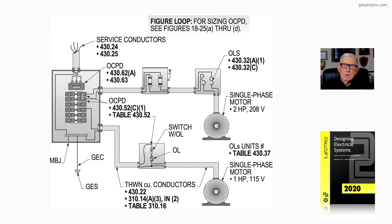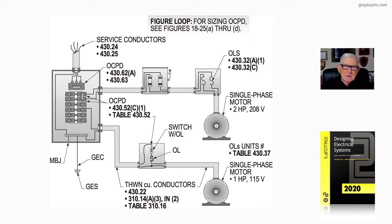Section 430.6A states these are the full-load currents that size every element of the motor circuit, except the overload protection, which uses the nameplate, and 430.6A2, which we will look at later. Based upon that information, let's look at Figure 18-1 in Chapter 18 of Stalkup's Electrical Design Book, Volume 2.